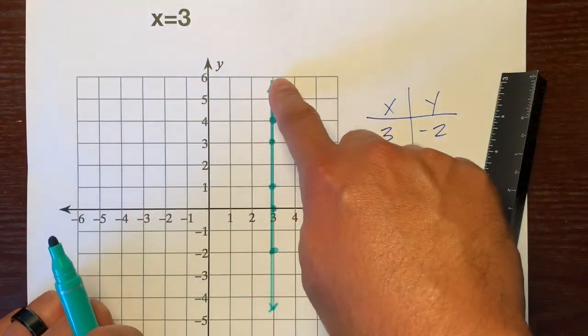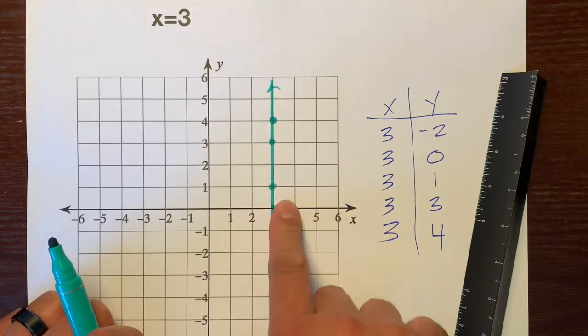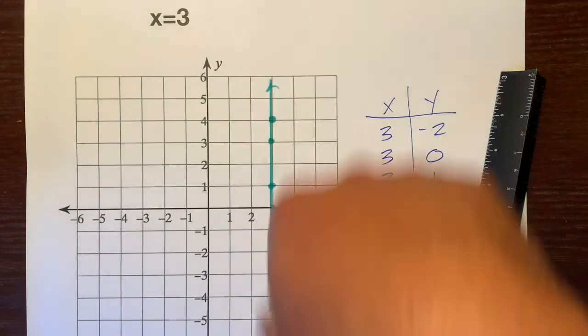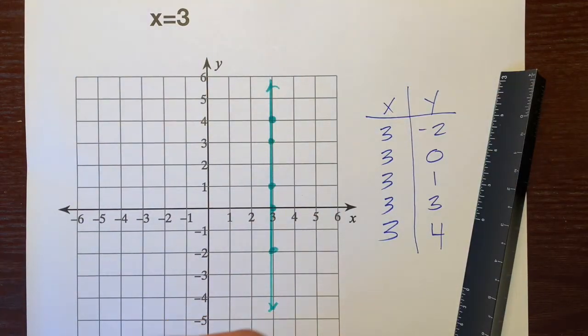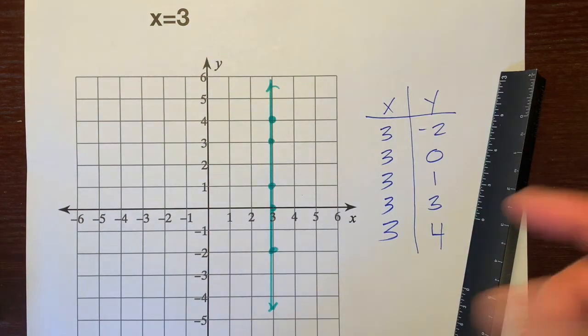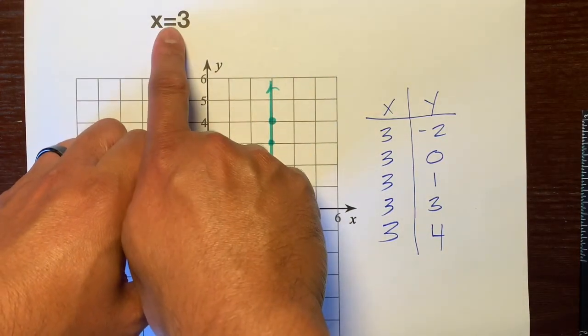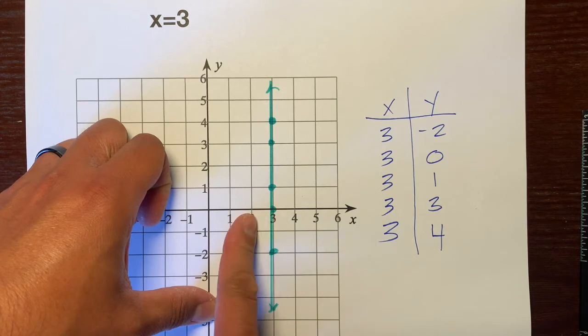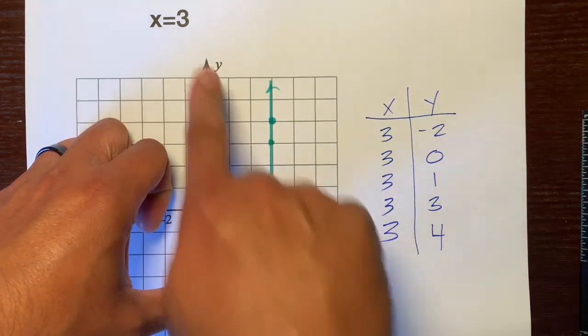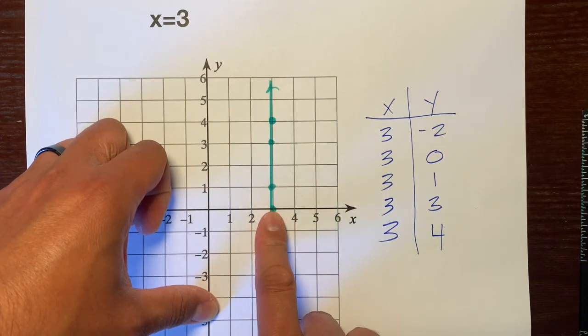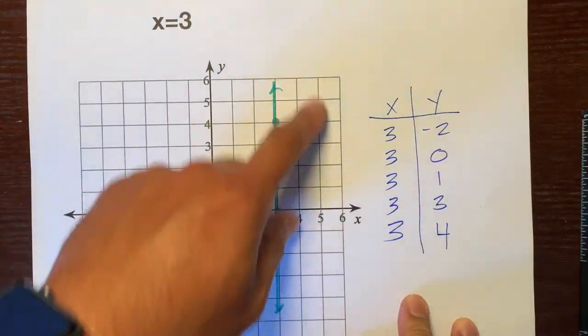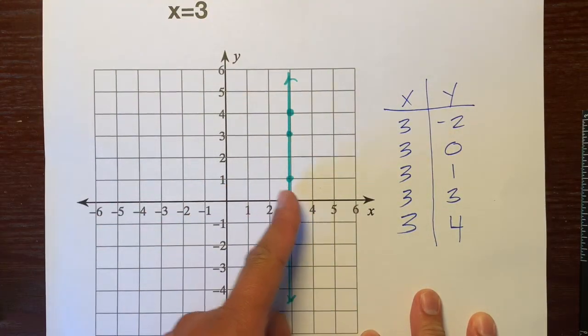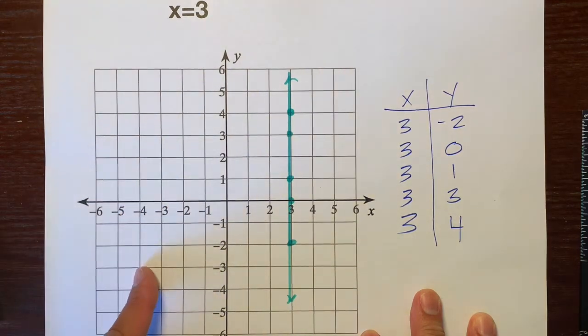Because no matter what y is, this x, this line, is always sticking to where x equals 3. It gives us a vertical line or an ups and downs line. When you have an equation where it's x equals a number, your line is going to be vertical because it doesn't move left or right. It stays rigid, stays there, whatever the x equals. If it said x equals 5, there would be a vertical line where over here. If it said x is equal to negative 4, then this line would shift over here and be a vertical line right here.